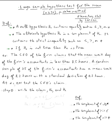The CEO of the firm claims that the mean workday of the firm's accountants is less than 8.5 hours. A random sample of thirty-five of the firm's accountants has a mean workday of 8.2 hours, with a standard deviation of 0.5 hours. At level of significance alpha equals 0.01, test the CEO's claim.